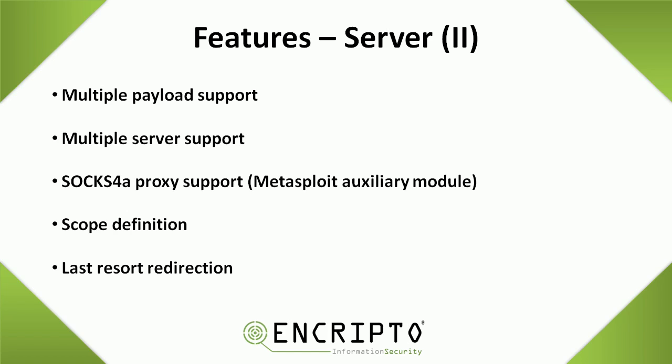This would be useful, for example, if you use Meterpreter over HTTPS with proxy support. Maligno supports scope definition, and this will allow you to define specific IP addresses, network segments, or just any address to which Maligno will serve the payloads. Requests which do not come from the scope defined on the tool will actually be redirected to a last resort URL. In this way, you can ensure that you don't serve the payload to a host which is not under scope.